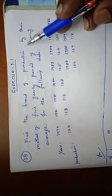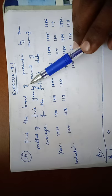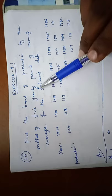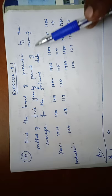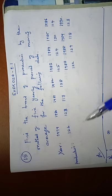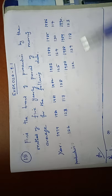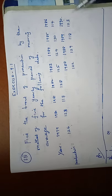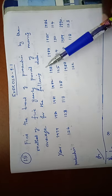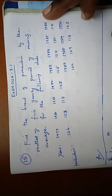Exercise 9.1, problem number 15: Find the trend of production by the method of 5-yearly moving average for the following data. The years are given from 1979 to 1990, and production values range from 126 to 123. All the details are given. Our aim is to find the 5-yearly moving average.